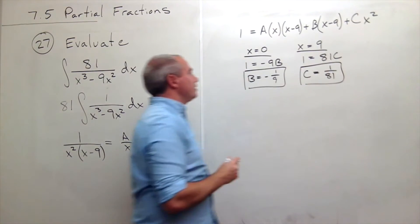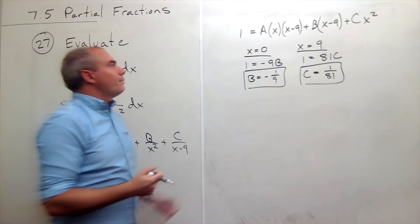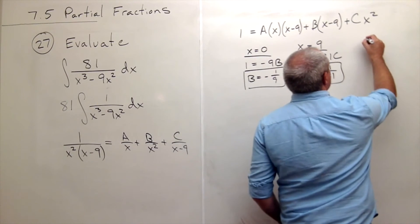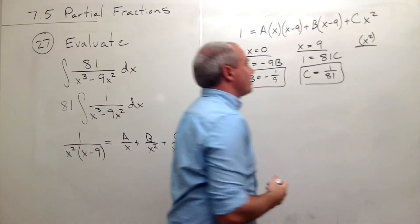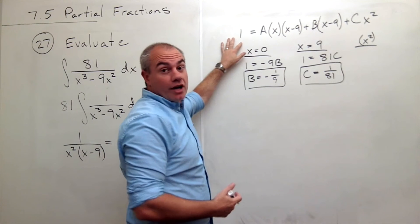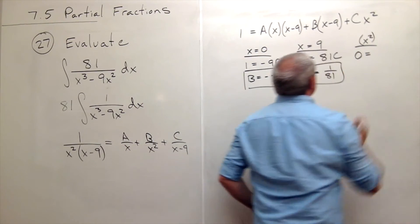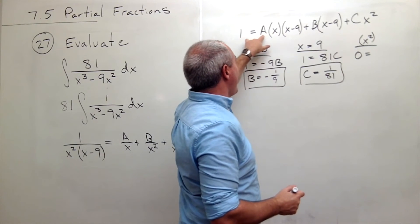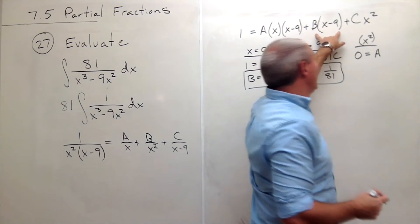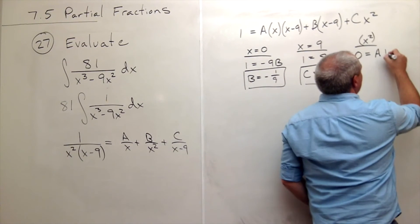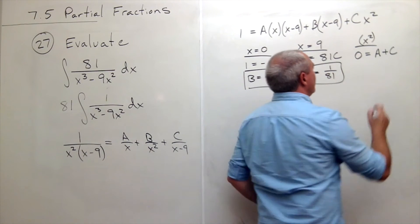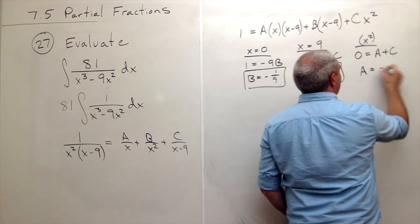Finally I need another value to determine A, but there's no good choices left. We use 0, we use 9, so what I'd like to do is let's just take the x squared terms. How many x squareds are there on the left side, and how many x squareds are there on the right side? There are no x squareds on the left. So it's 0 is equal to, how many x squareds come out of this term? I get A times x times x, so I get A of them. None from this thing, and C from this thing. So I get that 0 equals A plus C. I know what C is, it's 1 over 81, so that means that A must be equal to negative 1 over 81.